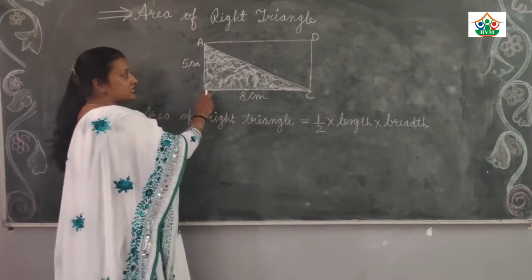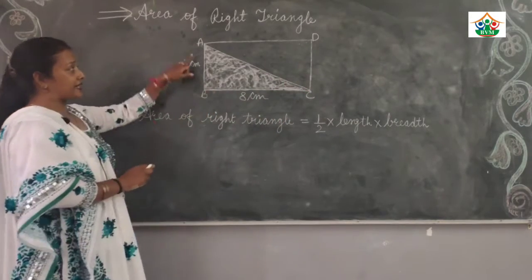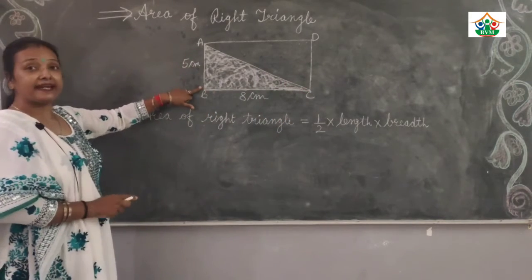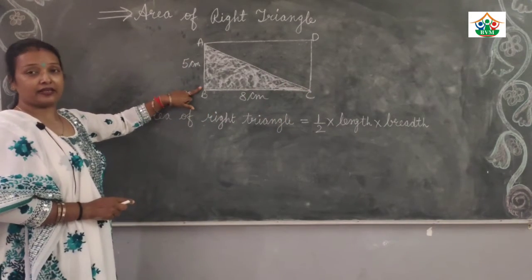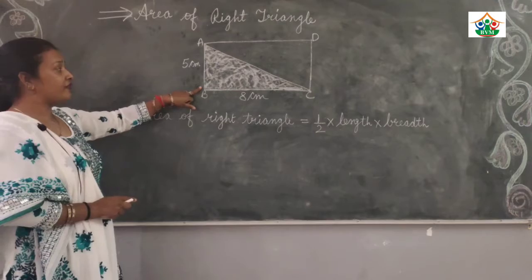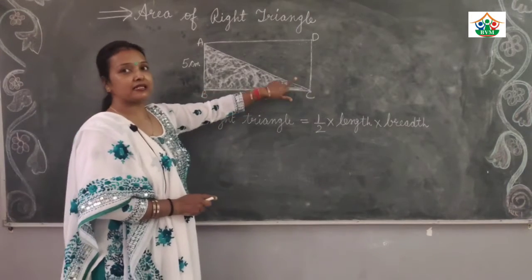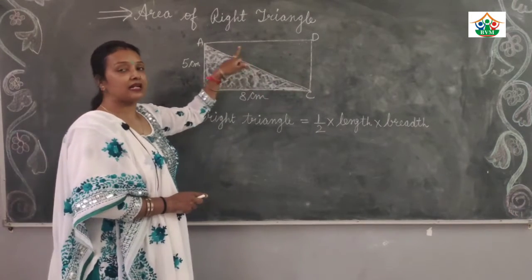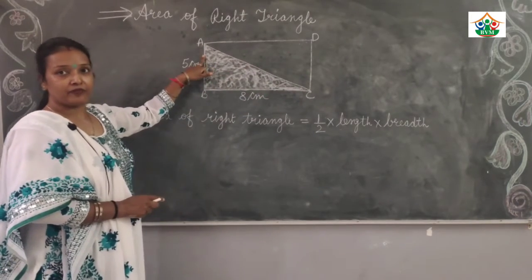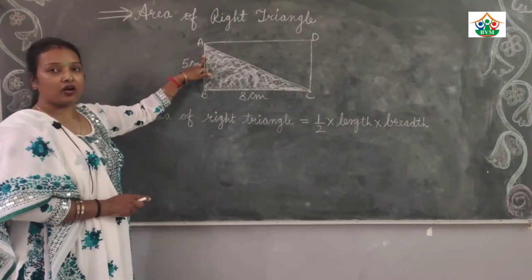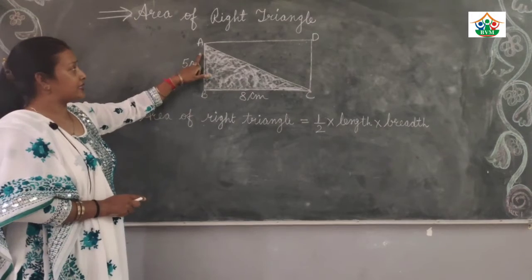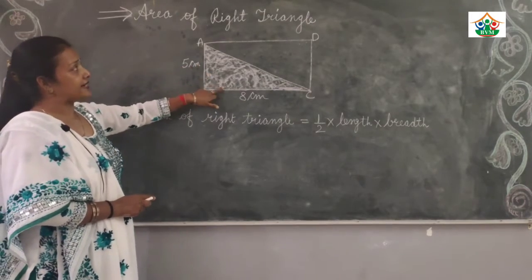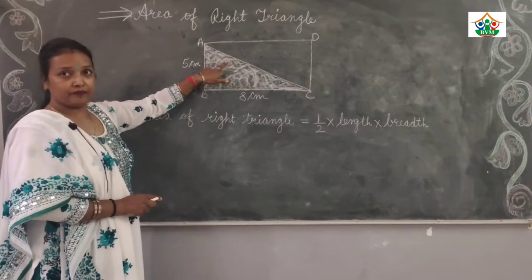We call it a right angle triangle. Why? Because all the angles are 90 degrees, so we call it a right angle triangle.